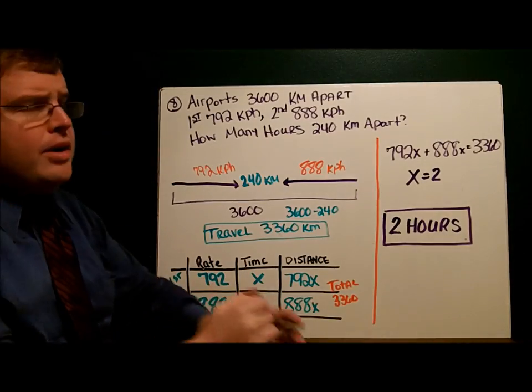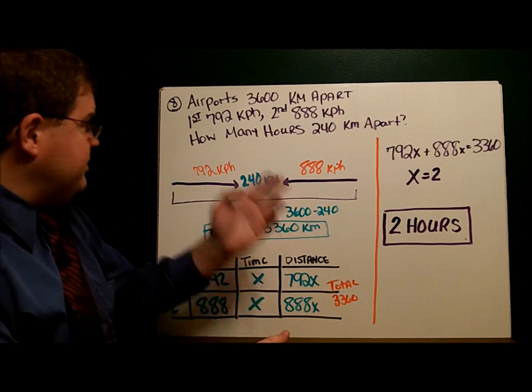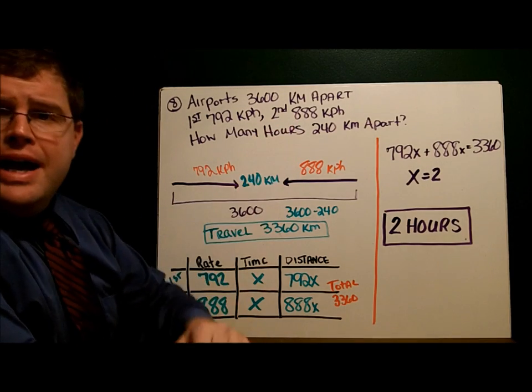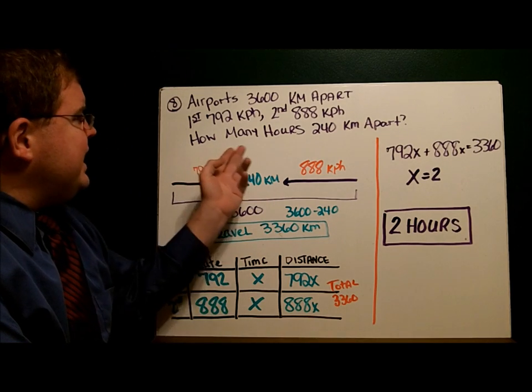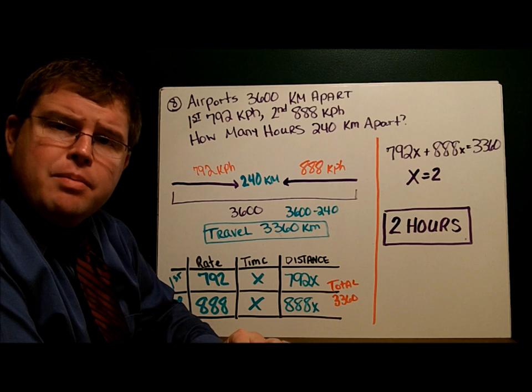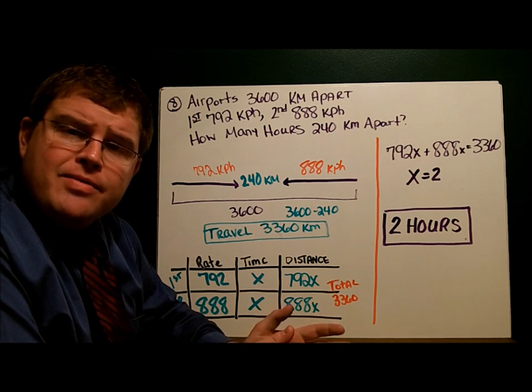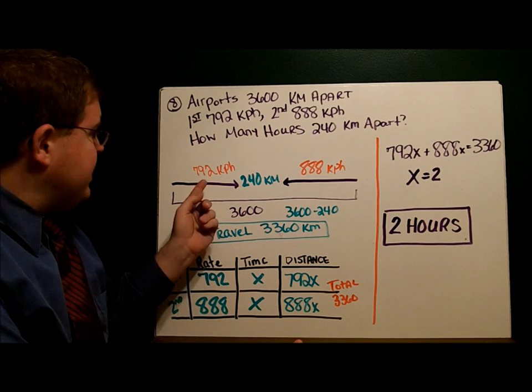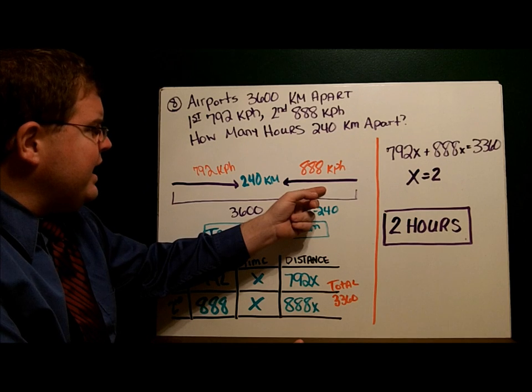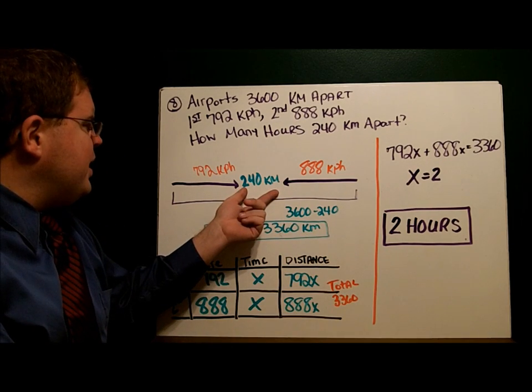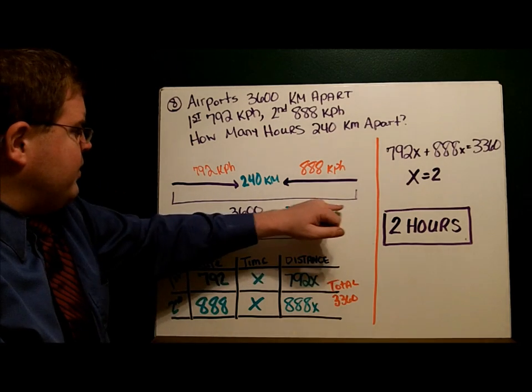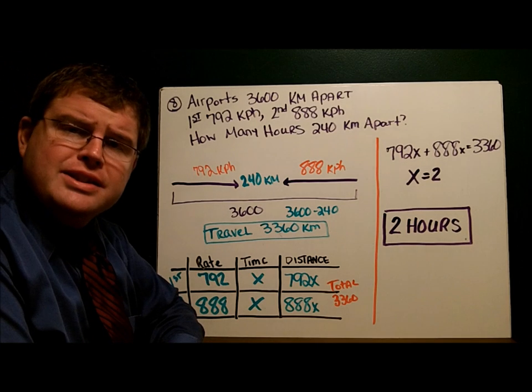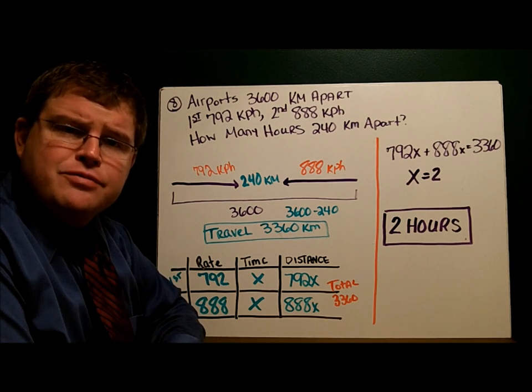In example number 8, we have two airports 3,600 kilometers apart. The first airplane travels 792 kilometers per hour, and the second one 888 kilometers per hour. In how many hours will they be 240 kilometers apart? Last time they gave us the time, this time we find it. I drew my picture: first airplane 792, second airplane 888, traveling toward each other. When will they be 240 kilometers apart? There's a total of 3,600. When they're 240 apart, they'll have traveled 3,360 kilometers combined.